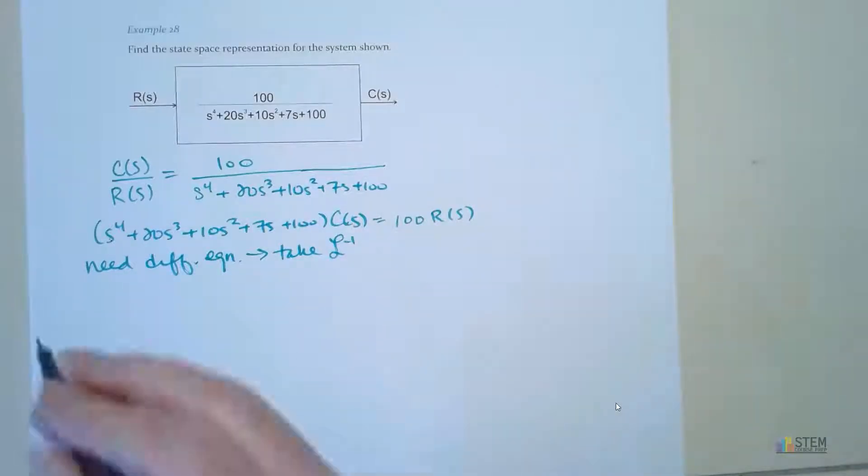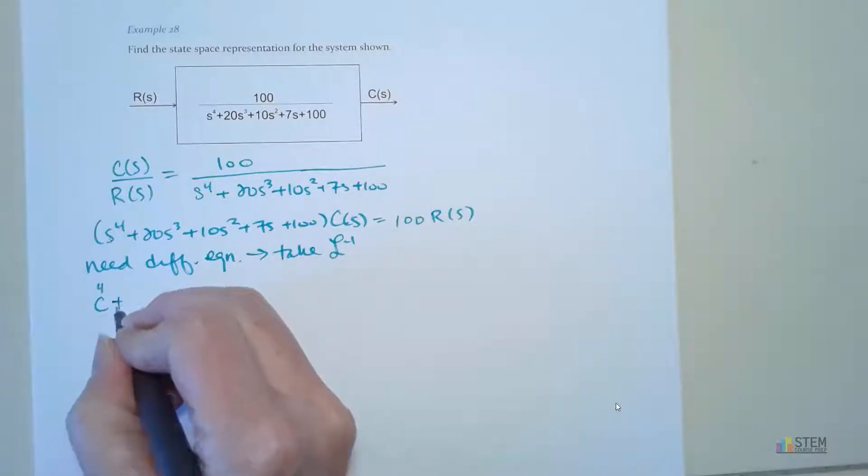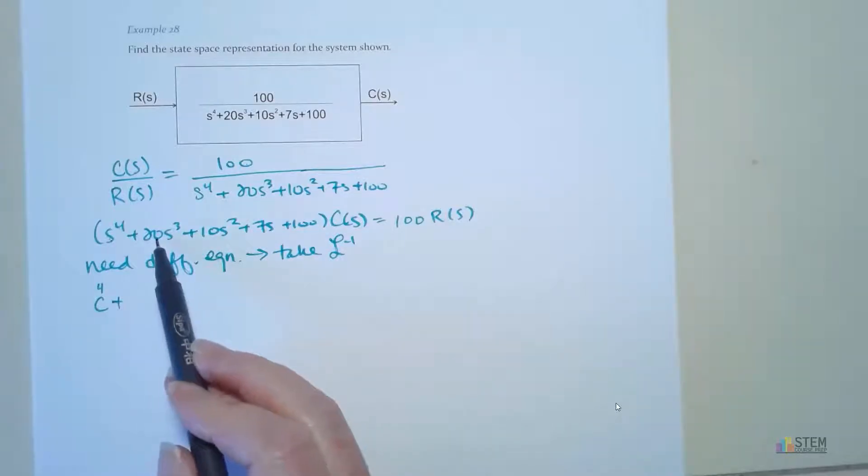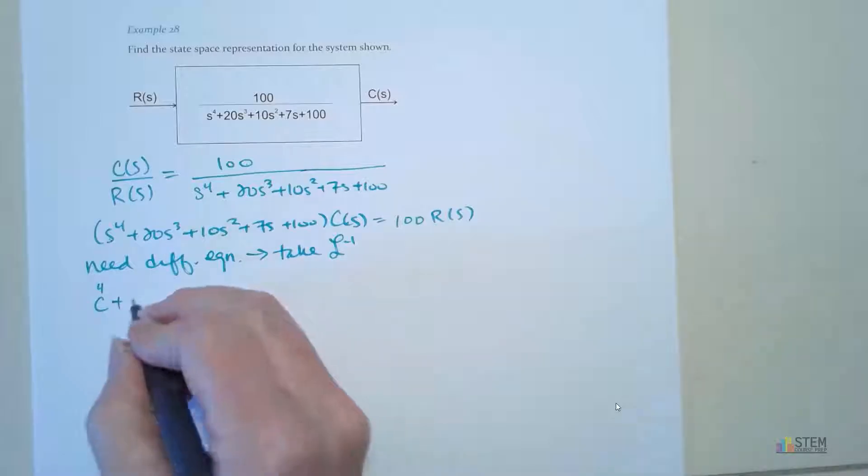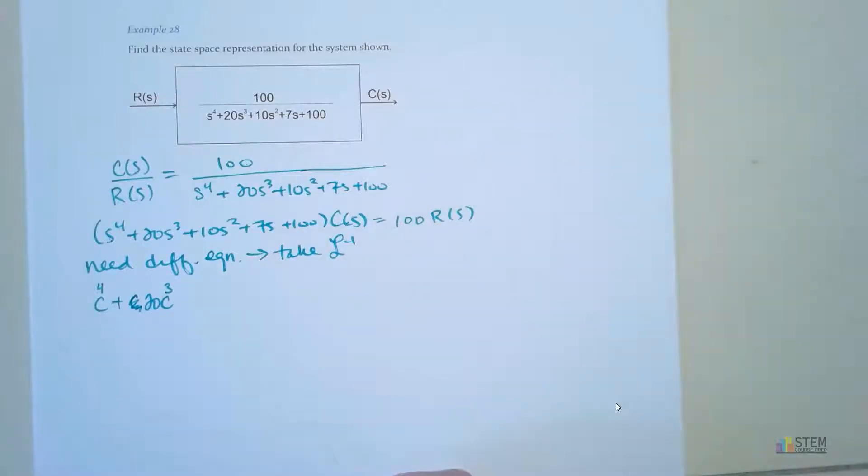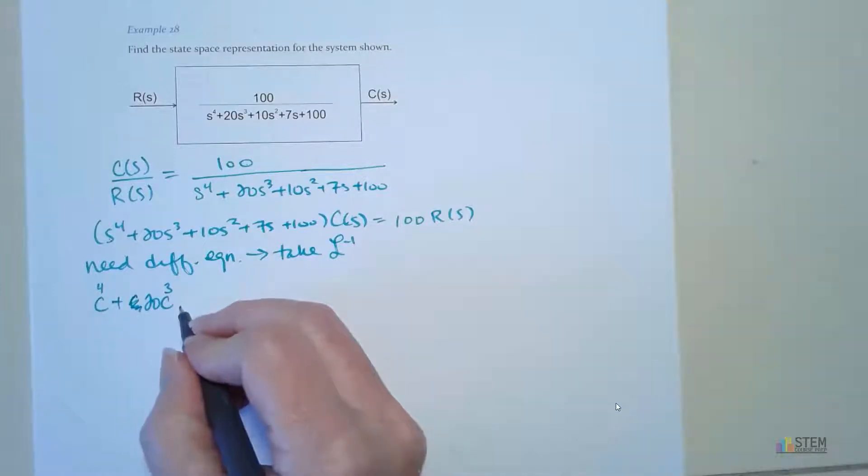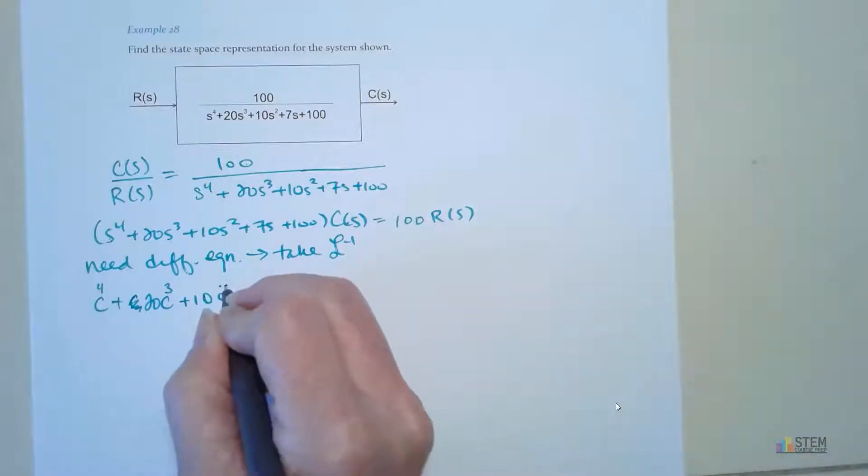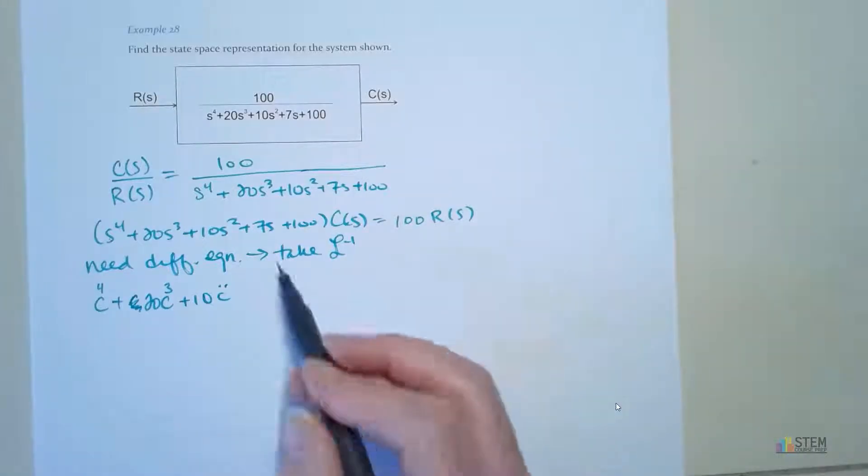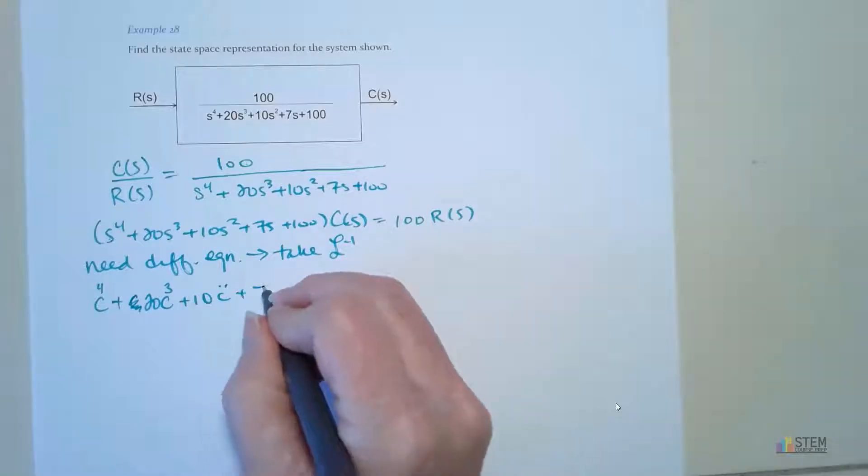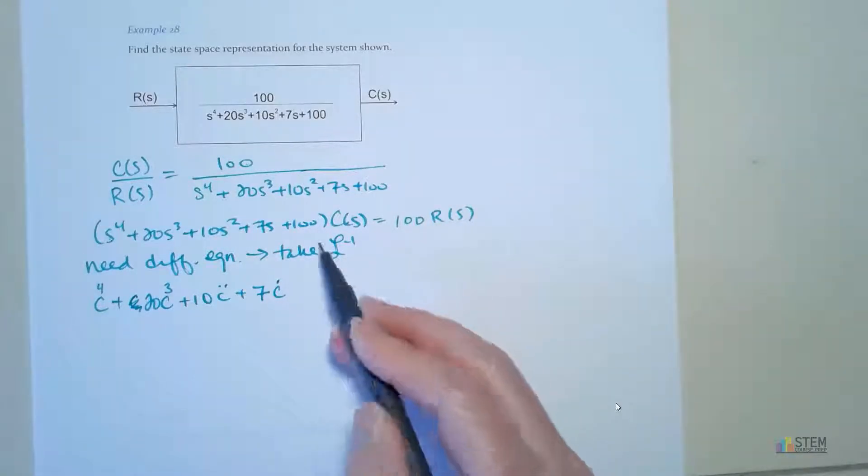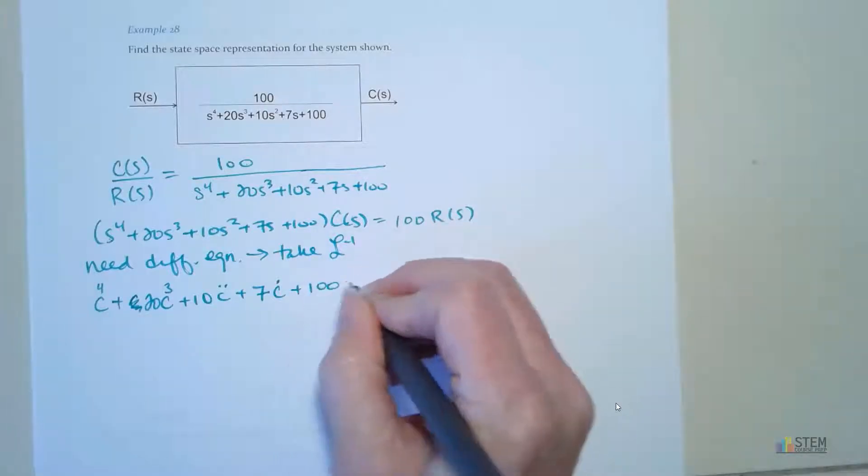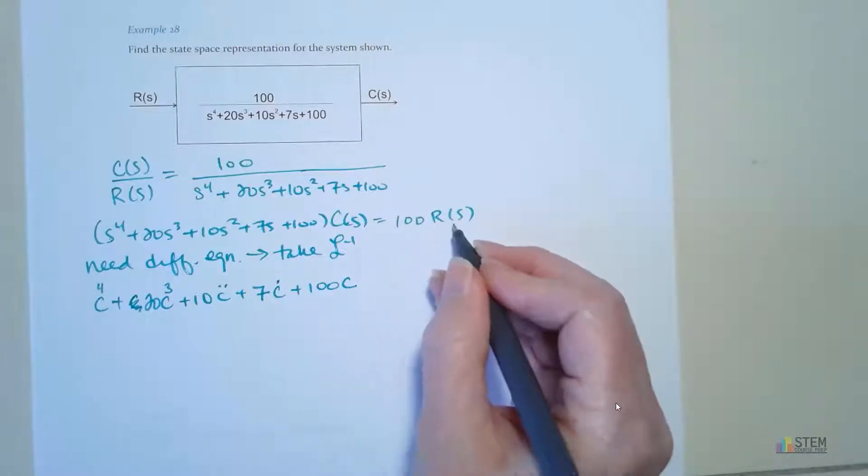So this is s to the 4th times c of s. So that means we've got the 4th derivative of c. And then we're going to have plus, we've got 20 times s cubed times c of s. So that's the 3rd derivative of c. So we're going to have 20 times the 3rd derivative of c. And then next, we've got 10 s squared c of s. This squared indicates 2nd derivative. So we'll have plus 10 c double dot. Then you just keep going. So 7s, that exponent is 1. So that means we're going to have 7 times c dot. Finally, we have 100 times c of s. That just gives us plus 100 times c. And then it equals 100 times r.